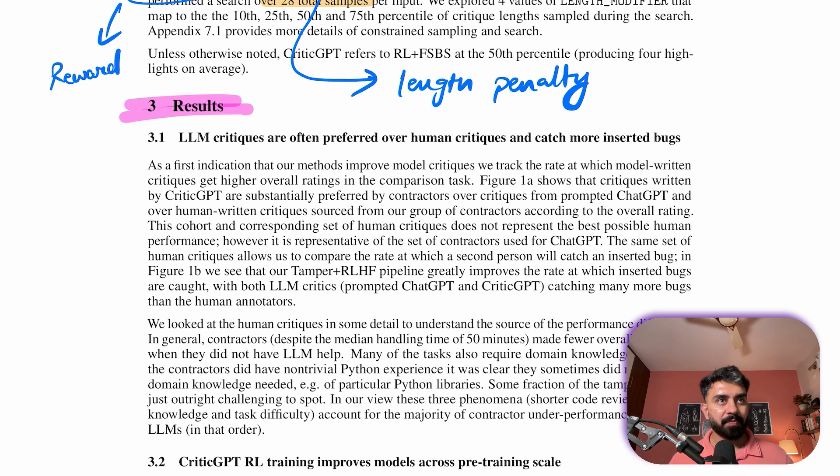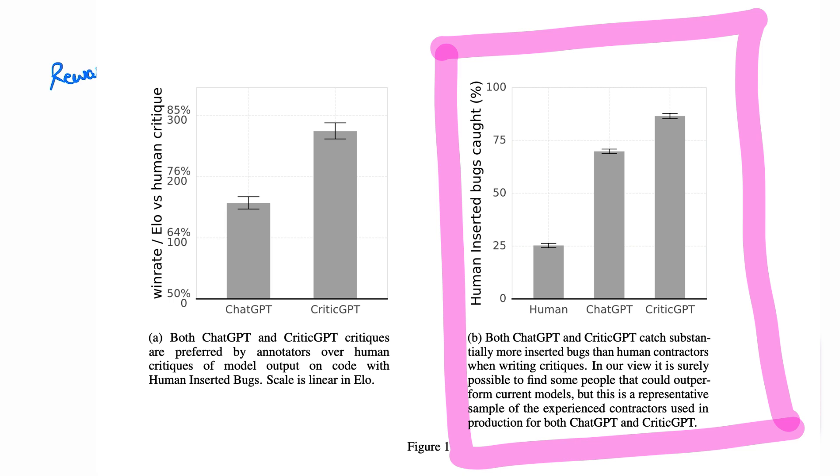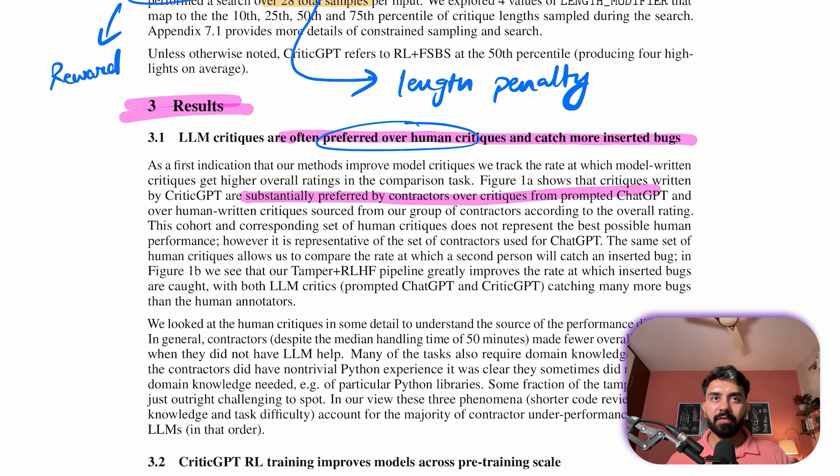Now let's look at the kind of results that this whole process has produced. LLM critiques, especially those by CriticGPT, are often preferred over human critiques and they catch more inserted bugs. That's what they're claiming. And contractors significantly favor CriticGPT's critiques over those from prompted ChatGPT and human written critiques.